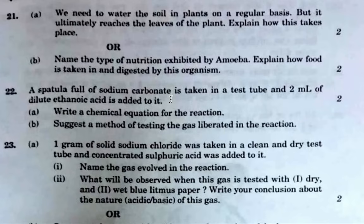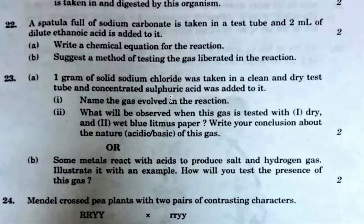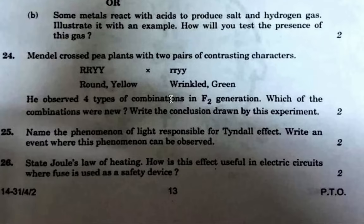You can write: Na₂CO₃ + 2CH₃COOH → 2CH₃COONa + CO₂ + H₂O. The acid turns blue litmus red and produces gas. Some metals react with acids — for example, zinc plus H₂SO₄ produces hydrogen gas. How will you test its presence? You test it using a burning match — it produces a pop sound.